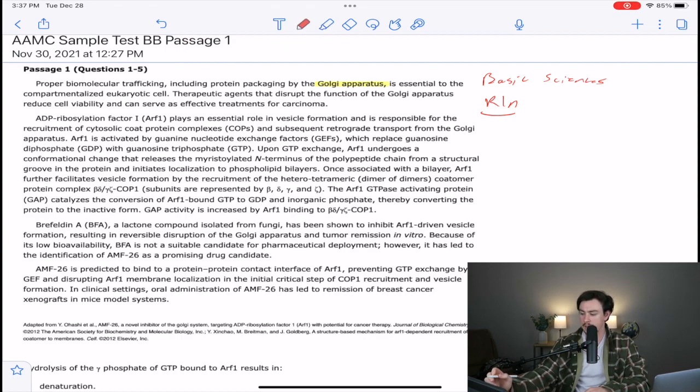So here we have that. If we have these therapeutics that actually decrease the function of the Golgi, so decrease GA for Golgi apparatus, if we decrease the function of the Golgi, that can lead to decreased cancer. Which makes sense - we kill a vital cell function, then we're going to end up killing the cell.